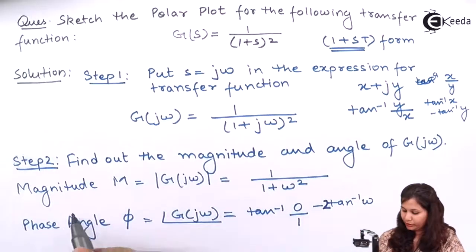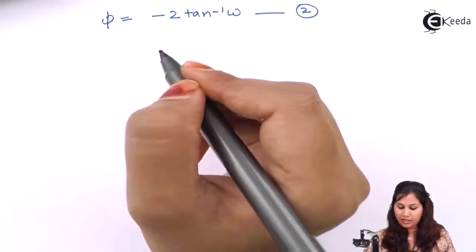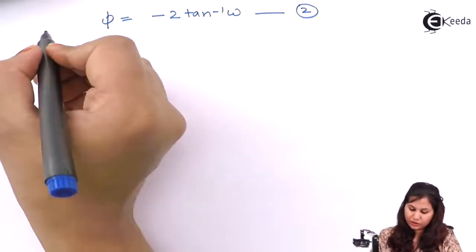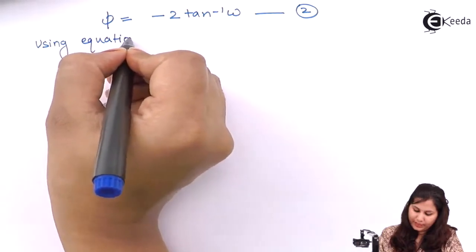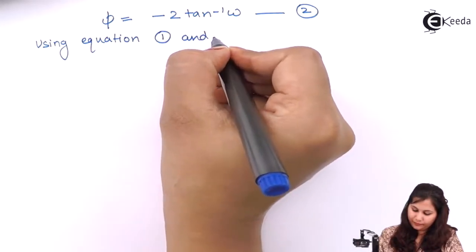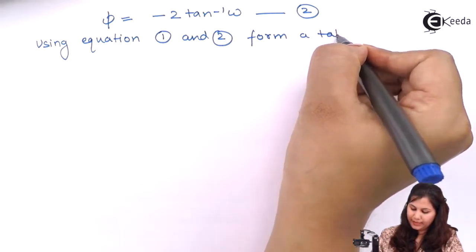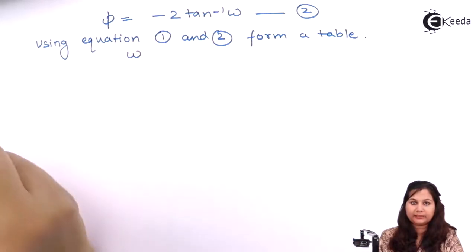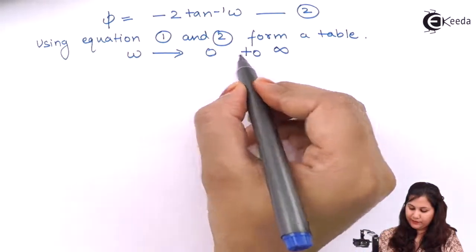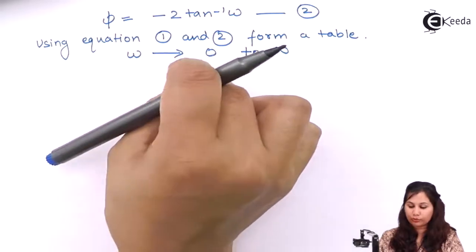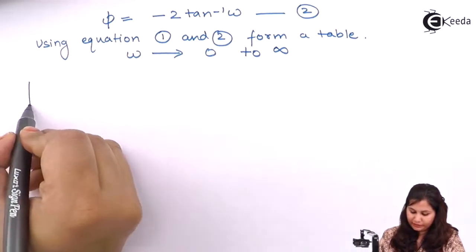Mark the magnitude equation as equation 1 and the phase angle as equation 2. Now using these two equations, form a table. In this table the value of ω, that is the frequency, will vary from 0 to infinity, and for these various values we will find out the magnitude and the phase angle.